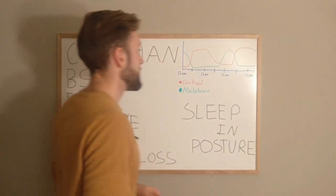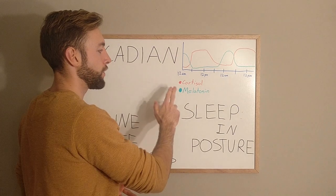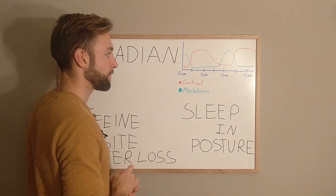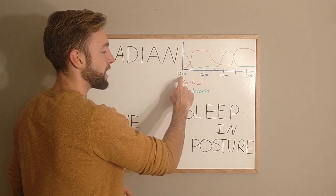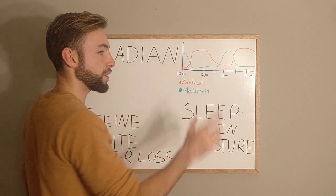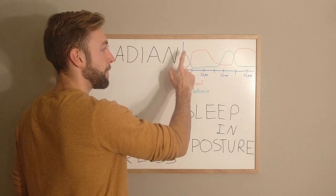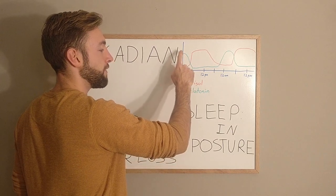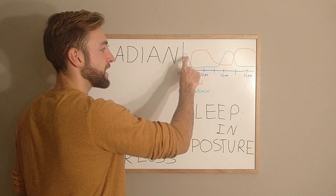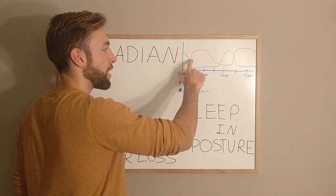The red here is cortisol, the green is melatonin. As you can see at midnight, we're starting here at midnight, cortisol is very low. That's the way it should be in a healthy individual, it's very low. But at midnight, melatonin should be very high. And then, as it gets closer to day, cortisol starts to go up and melatonin will drop off.